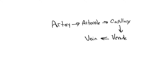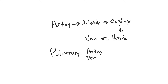So the pulmonary artery goes to the lungs — yes. Anything that starts with 'pulmonary,' whether it's an artery or a vein, means it's referencing the lungs. And when we see 'systemic,' that means the body. So those are the two circulations: pulmonary circulation and systemic circulation.